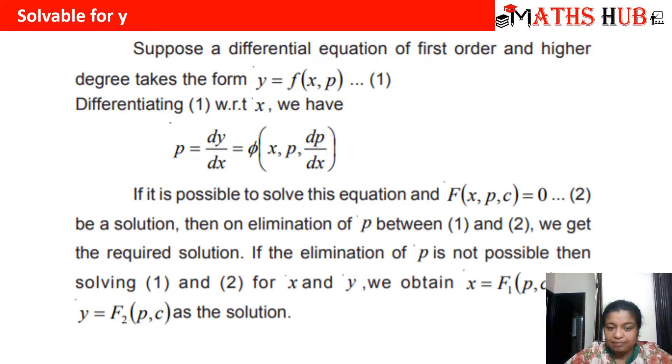So what is the first step? We'll differentiate the equation y equal to f of x comma p. On the left hand side when we differentiate y we'll get dy by dx, which will be replaced by p. Try to bring all the terms on one side and make factors. Then whichever factor is easy to solve to eliminate p, we will eliminate p between that equation and the given equation.